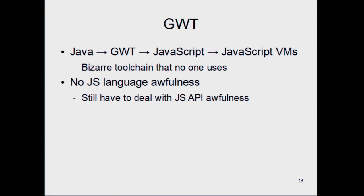If you want to run things on a JavaScript VM, you use GWT to compile your Java to JavaScript. No one really uses that toolchain that much anymore — I'm not sure why, it seems to work okay for me. The main advantage is you don't have to deal with the JavaScript language, which is an awful language to program in. You still have to deal with the JavaScript APIs — all the awful JavaScript APIs — but as a language you can just code everything in Java and compile it with GWT.